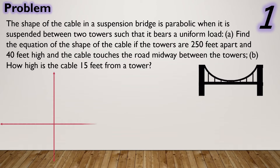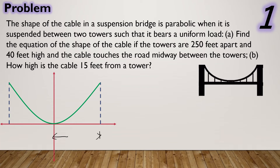Let us use the rectangular coordinate system to draw a graphical illustration of the situation. We have two towers that are 250 feet apart. We can use the origin between these two towers. Since the cable touches the road midway between the two towers, we can use the origin as the vertex of that cable. A tower of the bridge will be 125 feet away from the origin. The tower is 40 feet high, so there is a point on the parabola at coordinates (125, 40).